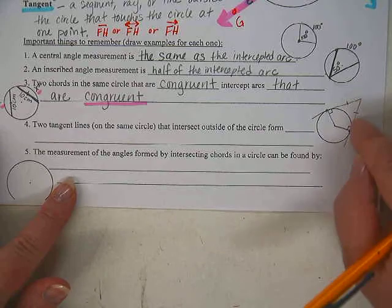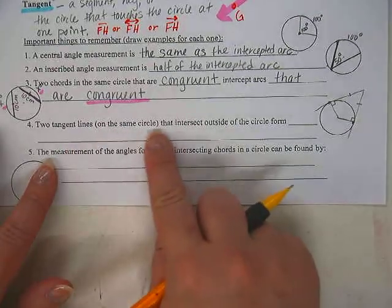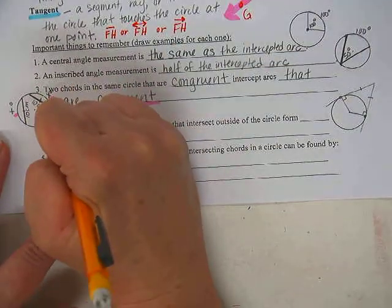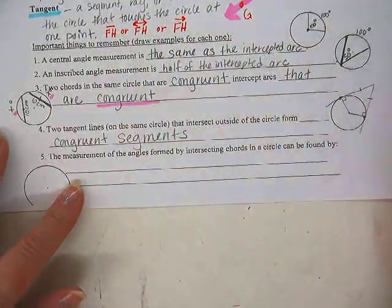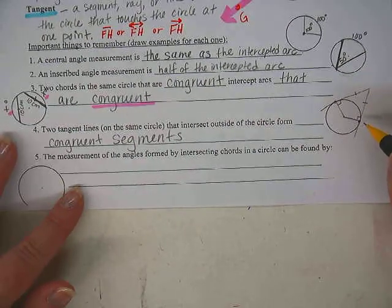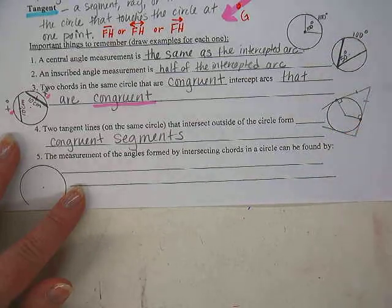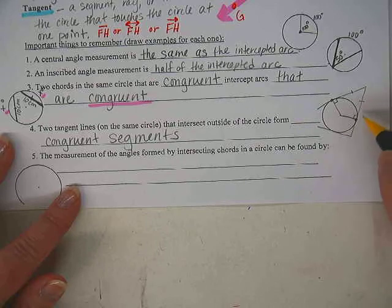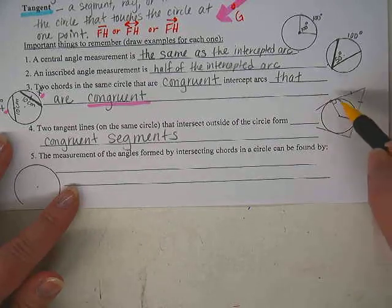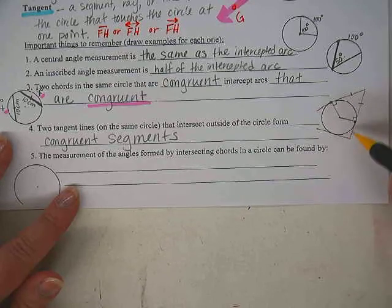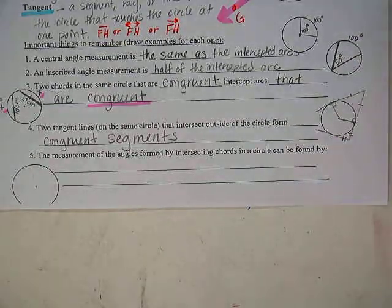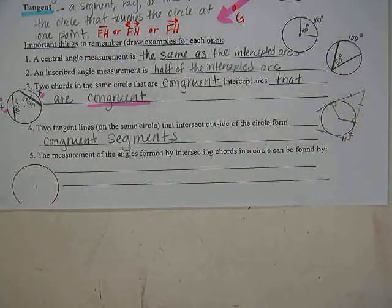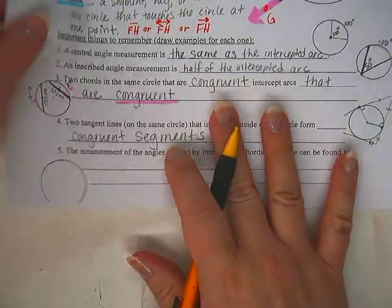What I was going to write here is: if two tangent lines intersect outside the circle, then those two segments are going to be congruent. Two tangent lines on the same circle that intersect outside of the circle form congruent segments. What if I have a different tangent line over here? These two are much longer than those two, but these two are congruent and these two are also congruent. You're always going to have these little sets of congruent segments where the two tangent lines intersect.